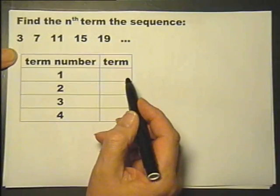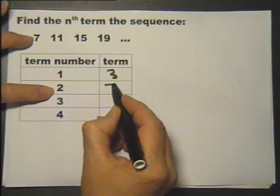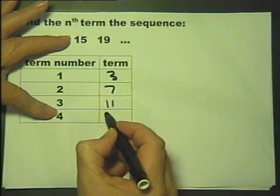First off, we'll fill in the table. Term number 1 is a 3. Term number 2 is a 7. Term number 3 is an 11. Term number 4 is 15.